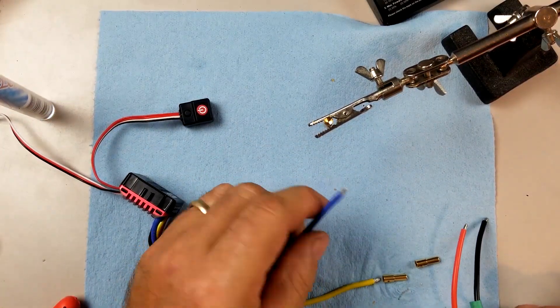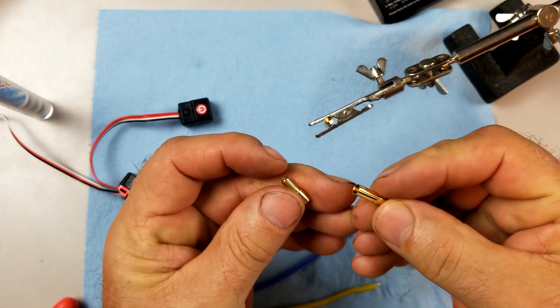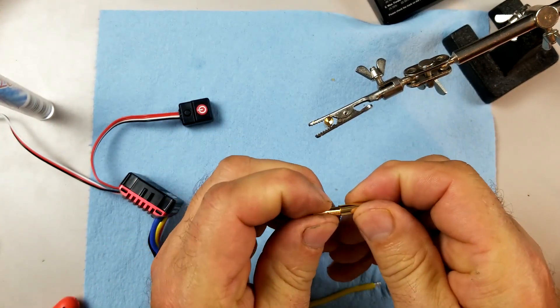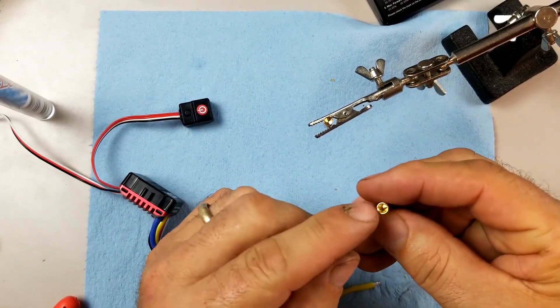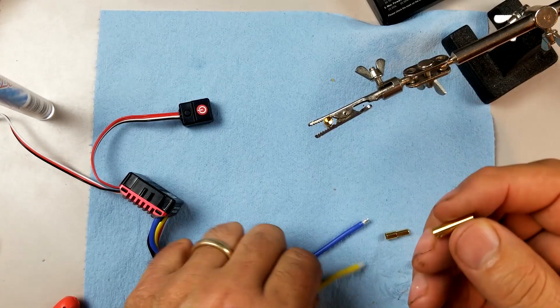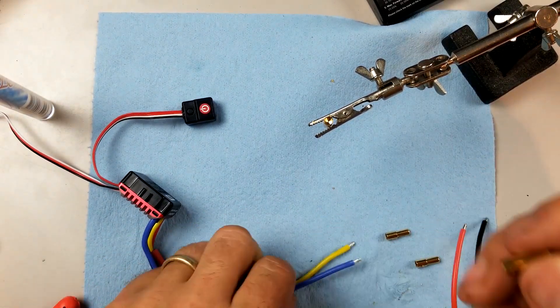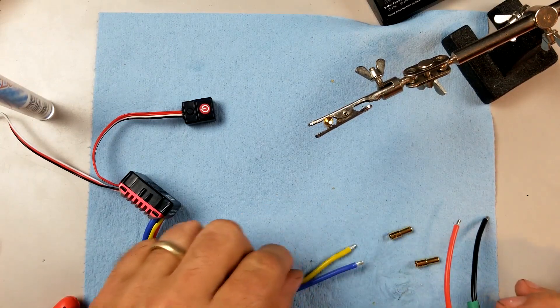Today I'm going to install some 3mm male and female connectors. You should always, just like batteries, install the female version where the power is coming from. So in this case it's going to be the ESC and then the motor is actually going to get the male version of this.